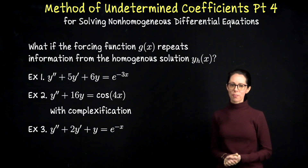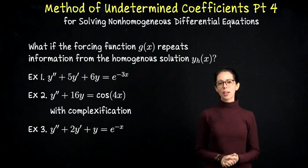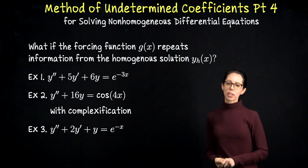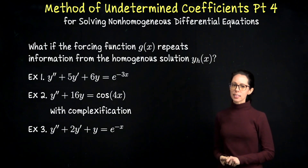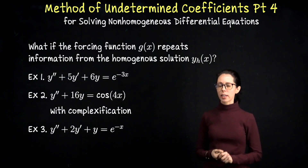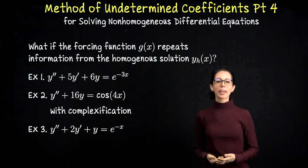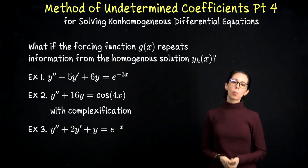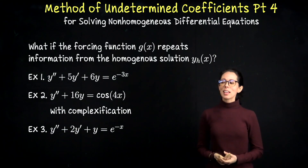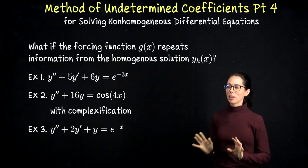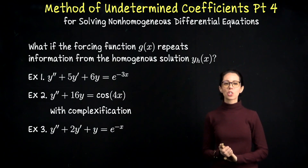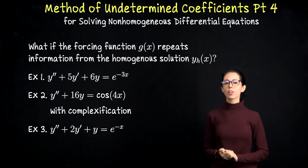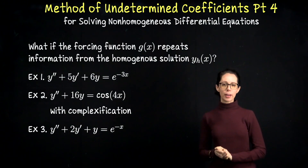Hi, everyone. This is my fourth video on the method of undetermined coefficients. In these three examples, what we're going to look at are instances where the forcing function looks like a component from the homogeneous solution. I just want to point out how to address that. Since we've already spent a lot of time finding homogeneous solutions and working through the method of undetermined coefficients, these examples are going to be a little bit brief.